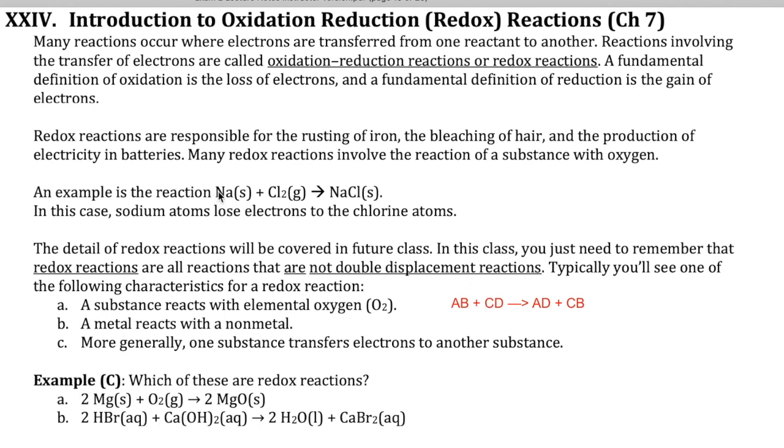So for example, if you look at this reaction here, Na plus Cl2 goes to NaCl. Now the reactants don't have this AB and CD pattern because the AB and CD are both ionic compounds. So neither one of these guys is an ionic compound. This is just an element, and that's also an element. So because of that, we would call this a redox reaction.